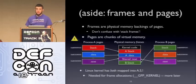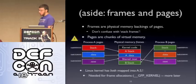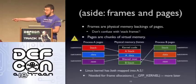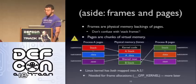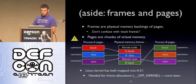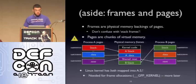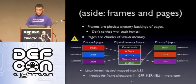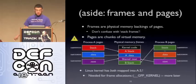Pages do not necessarily have to have frames associated with them at all times. I've given you a little drawing here. We have two processes running on our virtual system. Both of them have stack data and text, and they each have one page for each. Virtual memory address spaces are composed of pages; physical memory is composed of frames. Here's what memory looks like to process A: text is there and it's backed by a physical memory frame. Data is backed by a physical memory frame. Stack is backed by a physical memory frame.